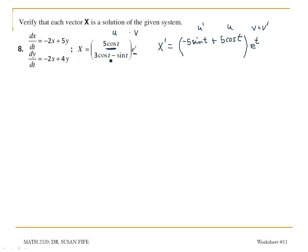For my second expression, u is 3 cosine t minus sine t, so u prime is going to be negative 3 sine t minus cosine t. That gets multiplied by e to the t, plus e to the t times 3 cosine t minus sine t, giving plus 3 cosine t minus sine t. And I'm going to simplify this.